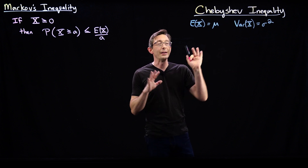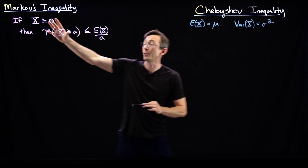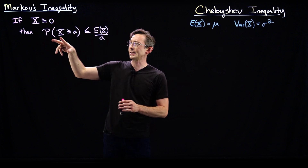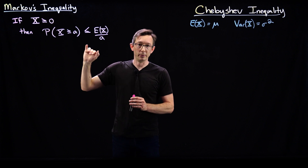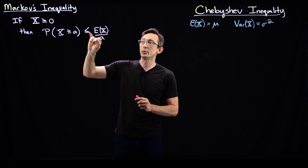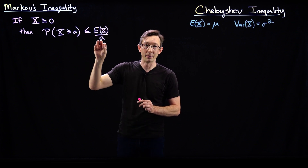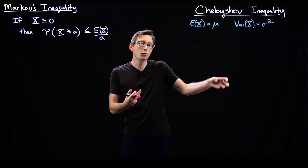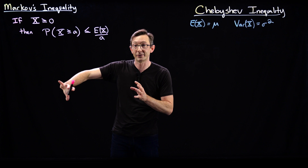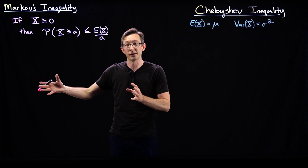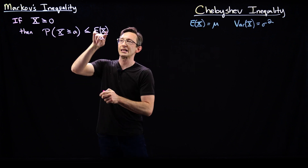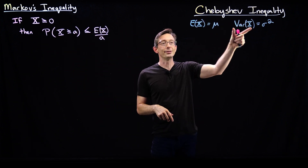Chebyshev's inequality is a little bit more sophisticated than Markov's inequality. Markov's inequality states that for a non-negative random variable, the probability of that variable being greater than some value a is less than or equal to its expected value divided by a. This basically means you can't have too much mass in the distribution too far to the right of the expected value, because there wouldn't be enough room to balance it out on the other side. This only uses the expectation value, though. Chebyshev's inequality is going to use the variance.